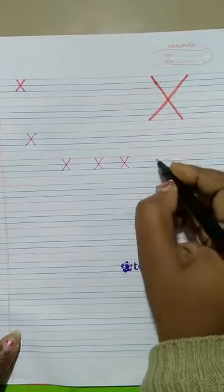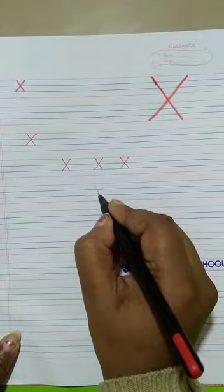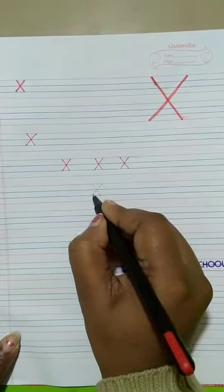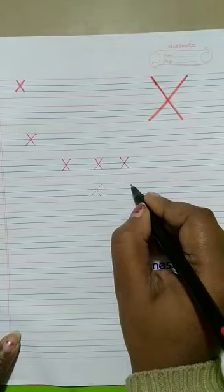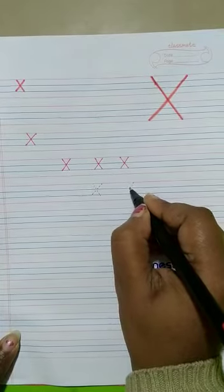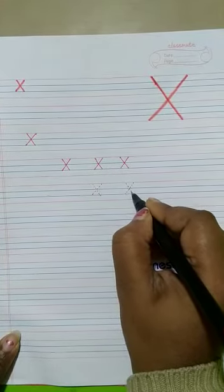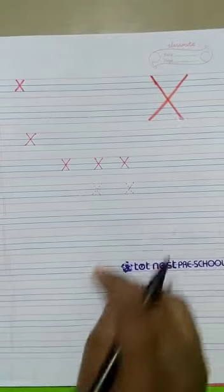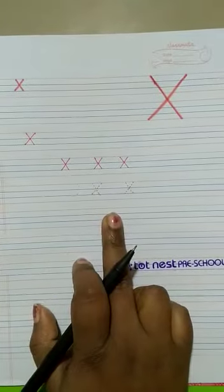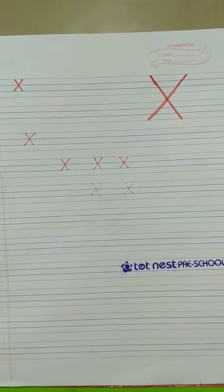Give your child a full dot to practice at home. This is the way we write alphabet X. That's all. Thank you.